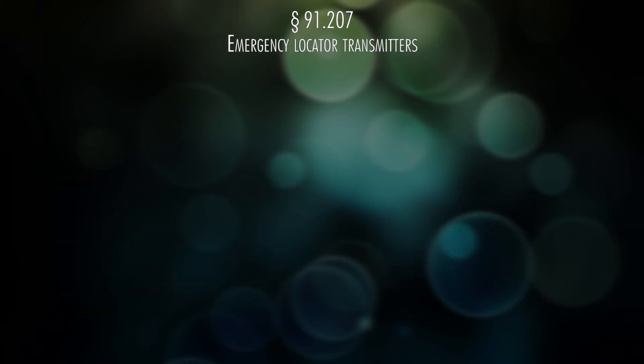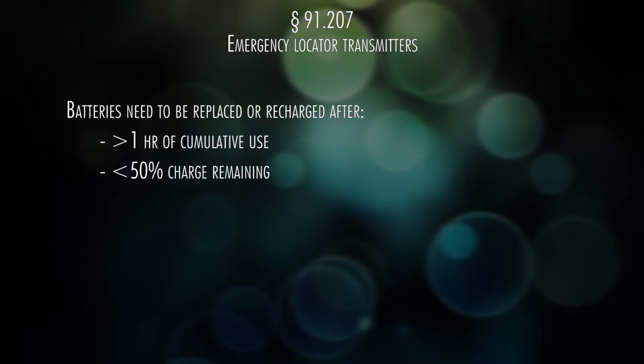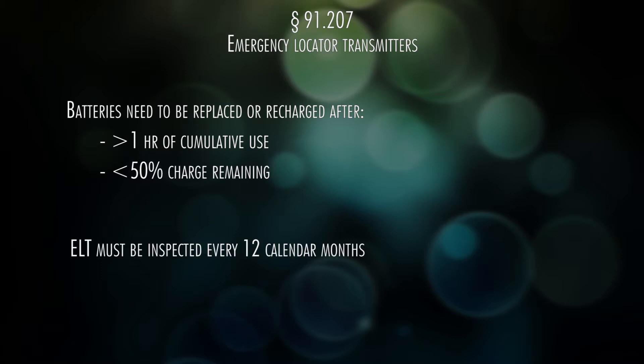The airplane needs to have an ELT — emergency locator transmitter — installed. Batteries in the ELT need to be replaced or recharged if they're rechargeable if the transmitter has been in use for more than one cumulative hour, or when 50% of the useful life is gone. Besides those requirements, the ELT has to be inspected every 12 calendar months. If you need to fly an airplane without an ELT installed or operable, there are some provisions for that in the rest of the part.